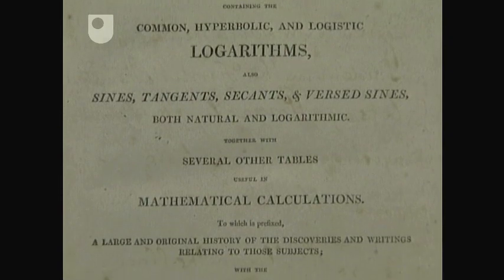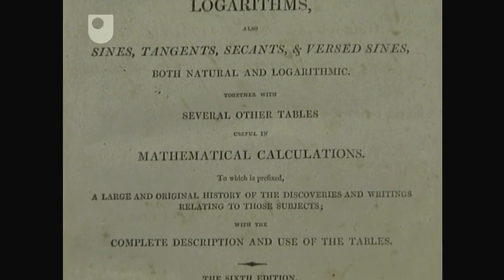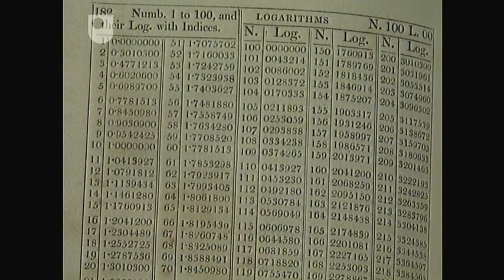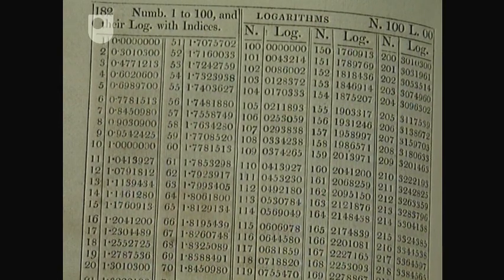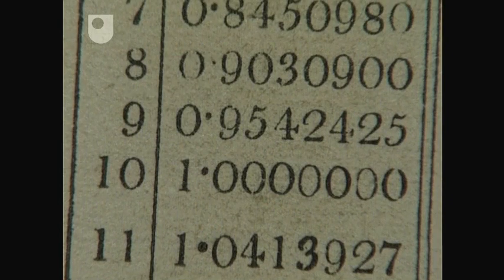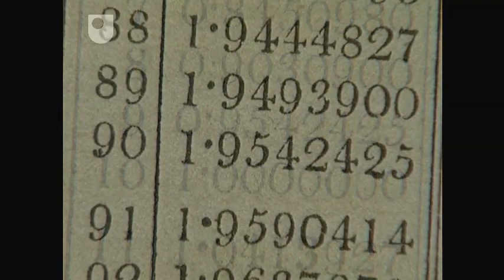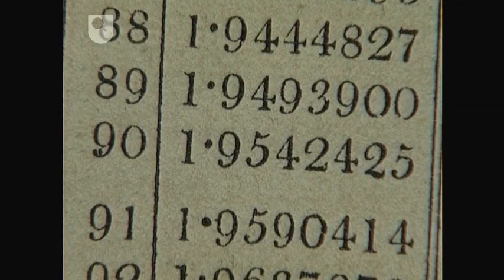Napier was also famous for the invention of logarithms. To multiply two numbers, say 9 and 10, just add the logs together. The answer is in another bit of the table. The new logarithm corresponds to the number 90.